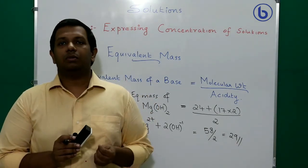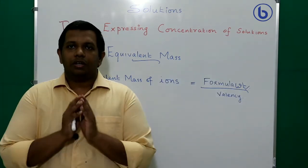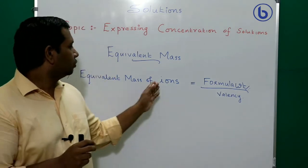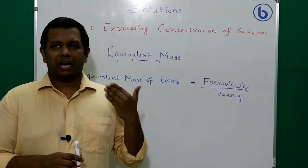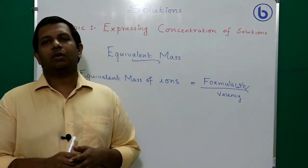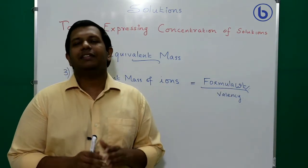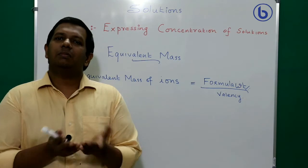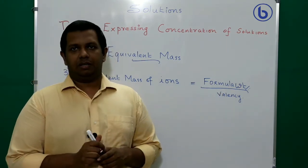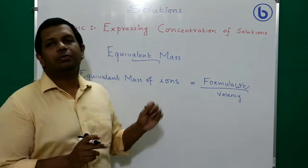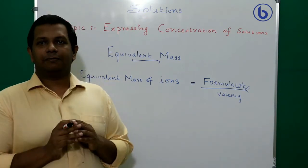Next, we will find the equivalent mass of ions. For ions, instead of molecular weight or atomic weight, we use the term formula weight. The formula is: equivalent mass of an ion = formula weight ÷ valency.